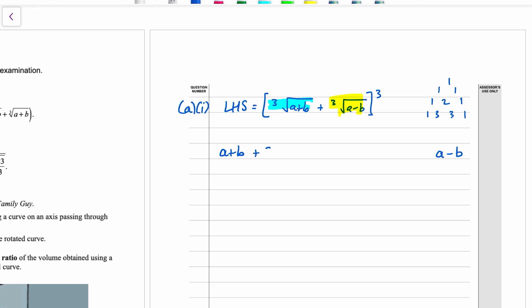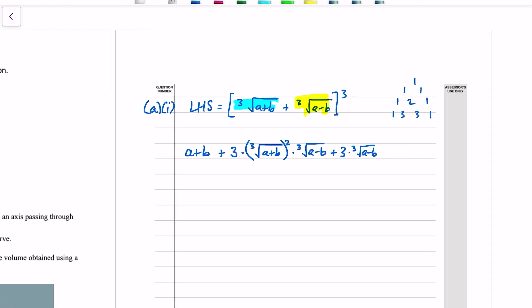And then the middle terms, we get three lots of the first thing squared times the second thing. So 3 multiplied by the cube root of a plus b, all squared, multiplied by the cube root of a minus b. And likewise with the other term, we get three lots of the first term, one of them, and the second term, two of them. My bad, that should have a plus. And then this one here is squared. And the last term is a minus b.